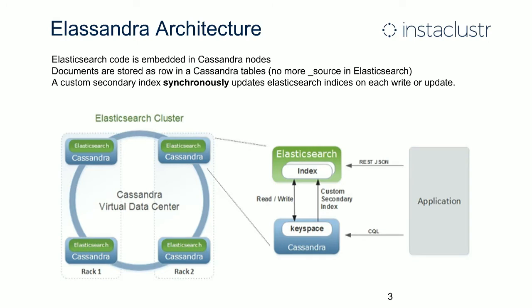In the Elassandra architecture, the Elasticsearch code is embedded in all nodes of a virtual data center, and all nodes act as both Elasticsearch primary master and data nodes. On each Cassandra upsert — every insert, update, or delete operation — Cassandra rows are indexed in a local Elasticsearch shard through a custom secondary index. Elasticsearch search requests submitted through the JSON REST API are then distributed to all nodes, providing horizontal scalability.